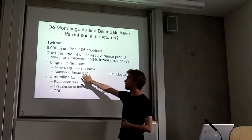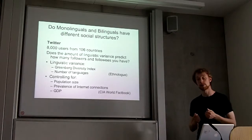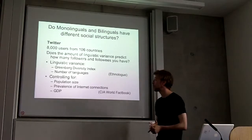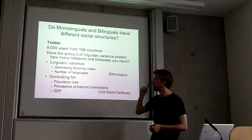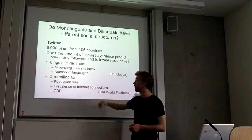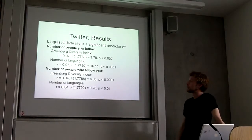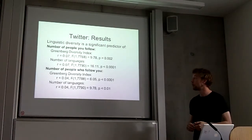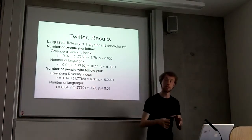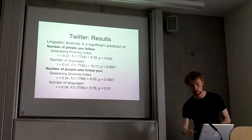I'm using two measures of linguistic variance: the Greenberg Diversity Index, which is the probability that any two people in the country speak the same mother tongue — it's not an ideal measure for bilingualism, but probably the best we've got — and also the number of languages. I'm controlling for population size, the prevalence of internet connections, and gross domestic product. What I find is that linguistic diversity is a significant predictor of the number of people you follow and the number of people who follow you, and these are positive correlations. So if you live in a bilingual community, you're more likely to know more people.